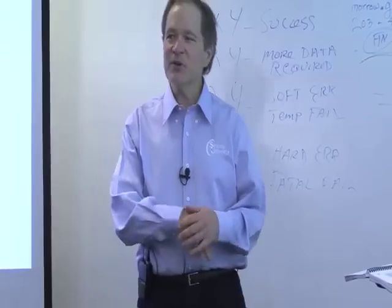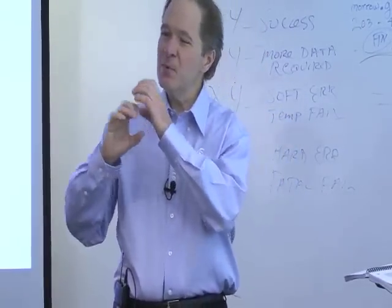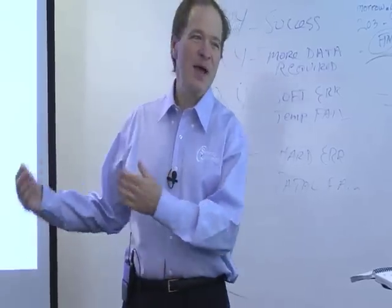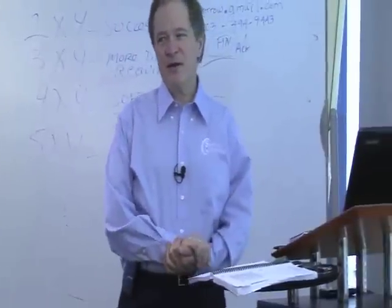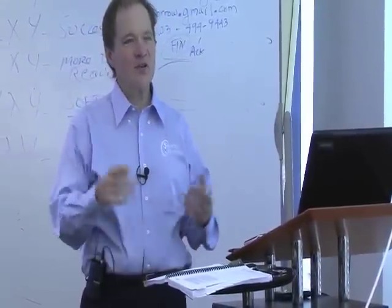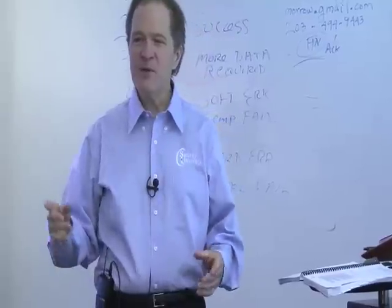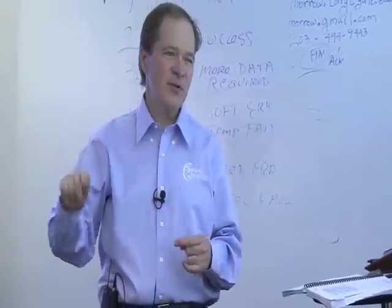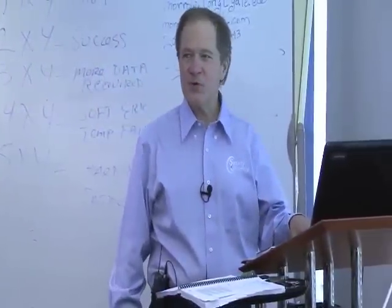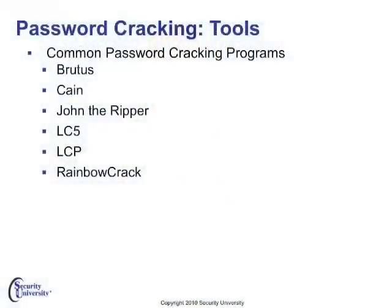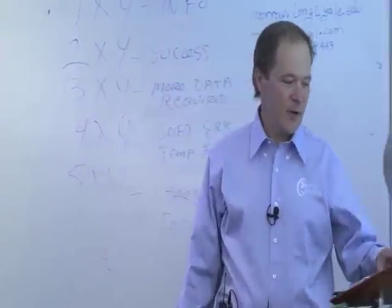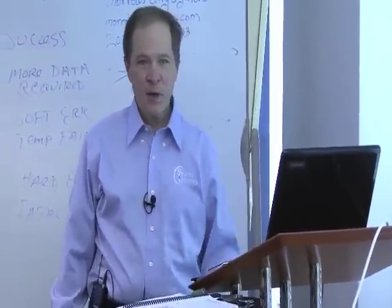Trying to watch people type in their password via shoulder surfing or videotaping them — if you're looking at places where people are using computers out in the open, you can use a camcorder, zoom in on their fingers, record that, then go back and replay it slowly. Acoustic cryptanalysis is actually listening to them typing the keys — this is even better on a phone because you can record the DTMF tones if they're typing pins or passwords over a phone keypad. Tools to do this include John the Ripper, Cain and Abel, Brutus, Ophcrack 5 and 6, and Rainbowcrack. There are other password crackers out there as well, including one we have in a lab which is a replacement for Ophcrack.